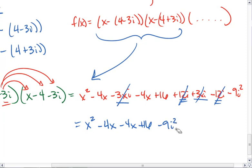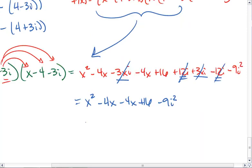But remember, i squared is the same as negative 1. So I get x squared minus 8x plus 16 plus 9, which equals x squared minus 8x plus 25.